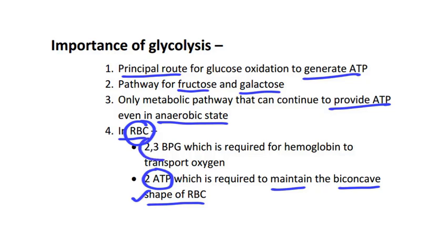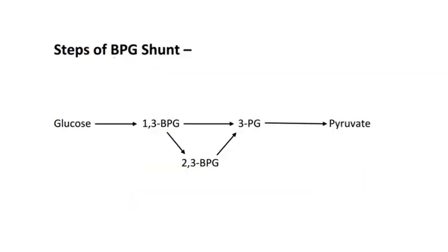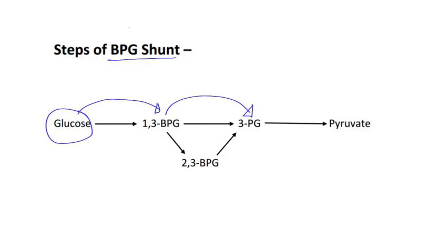In RBC, 2,3-BPG is produced by the BPG shunt. This 2,3-bisphosphoglycerate is required for hemoglobin to transport oxygen. Normally, glucose produces 1,3-bisphosphoglycerate, and 1,3-bisphosphoglycerate produces 3-phosphoglycerate. But in RBC, through the BPG shunt, 1,3-bisphosphoglycerate produces 2,3-bisphosphoglycerate, which then produces 3-phosphoglycerate. This 2,3-bisphosphoglycerate helps hemoglobin to carry and transport oxygen.